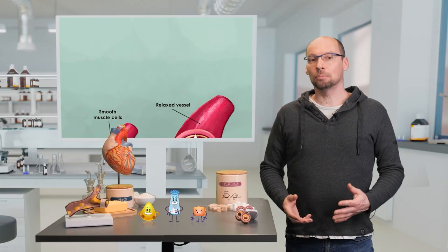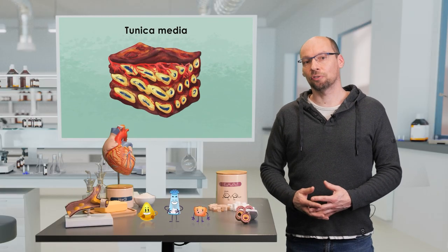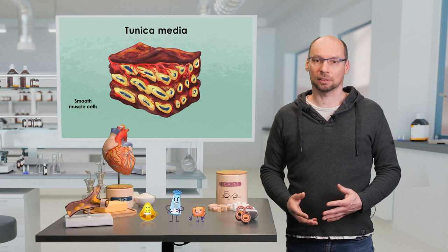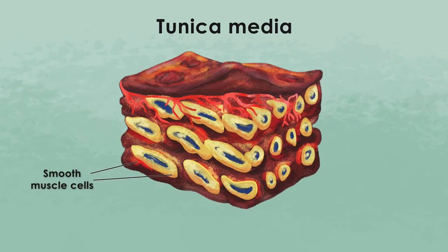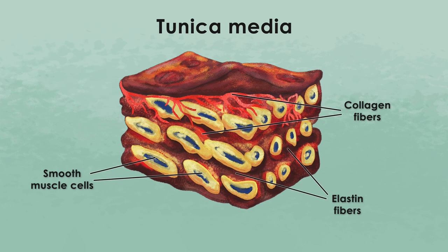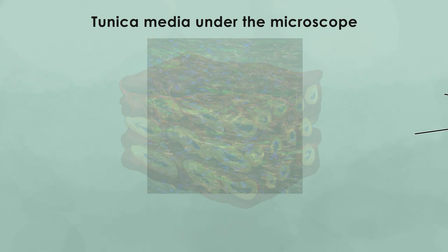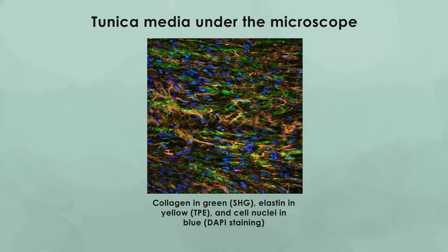The middle layer, the media, consists mainly of circumferentially oriented smooth muscle cells, which are embedded in a complex network of collagen and elastin fibers. The media, on one hand, is due to the smooth muscle cells able to actively increase and decrease the diameter of the artery at different physiological situations. On the other hand, the media contributes mainly to the mechanical properties of the artery.